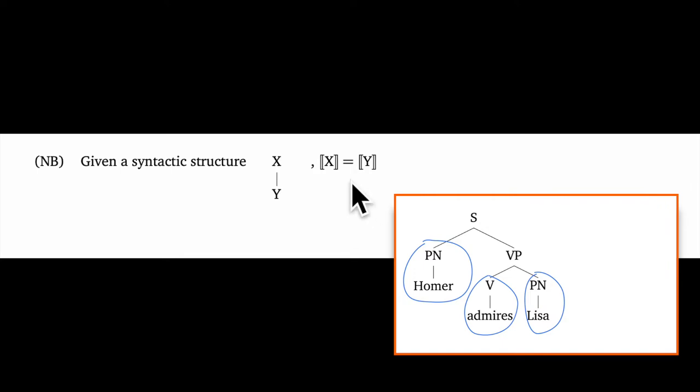In principle, semantically, this rule could be dispensed with since it has no impact on the overall meaning. But we keep it here because syntacticians have lots of these non-branching structures in their trees, and we want to be able to honor what they give us. Hence rule NB.